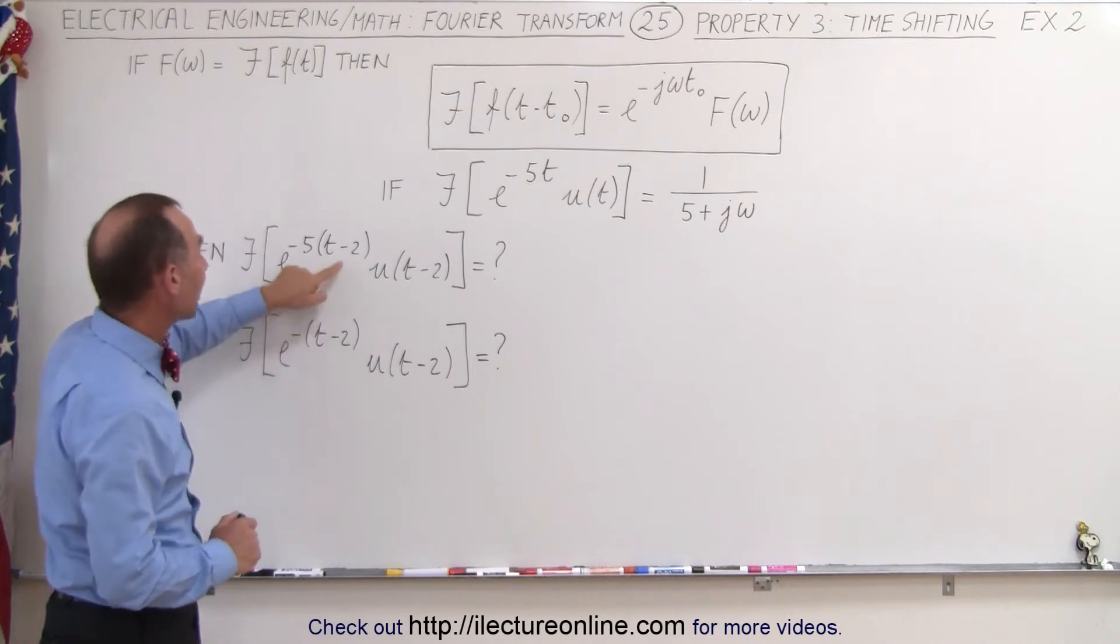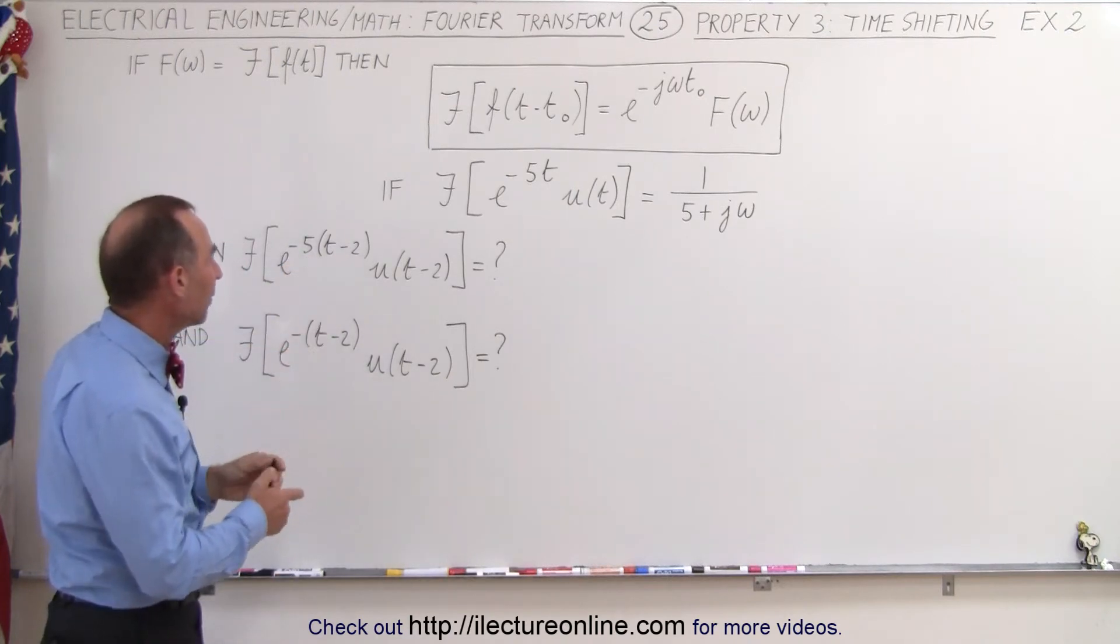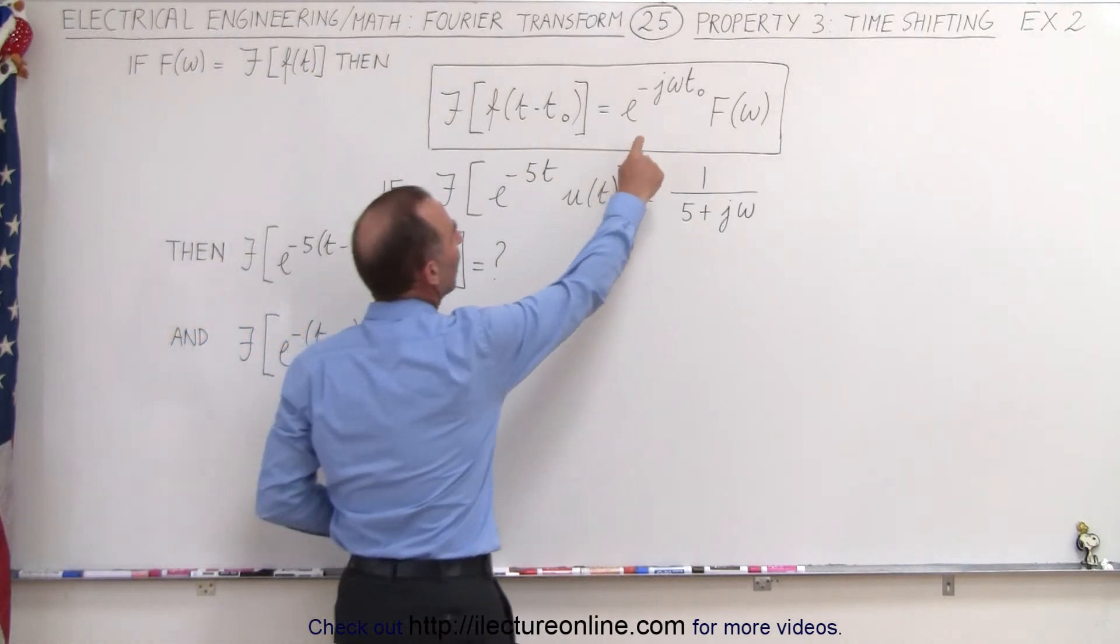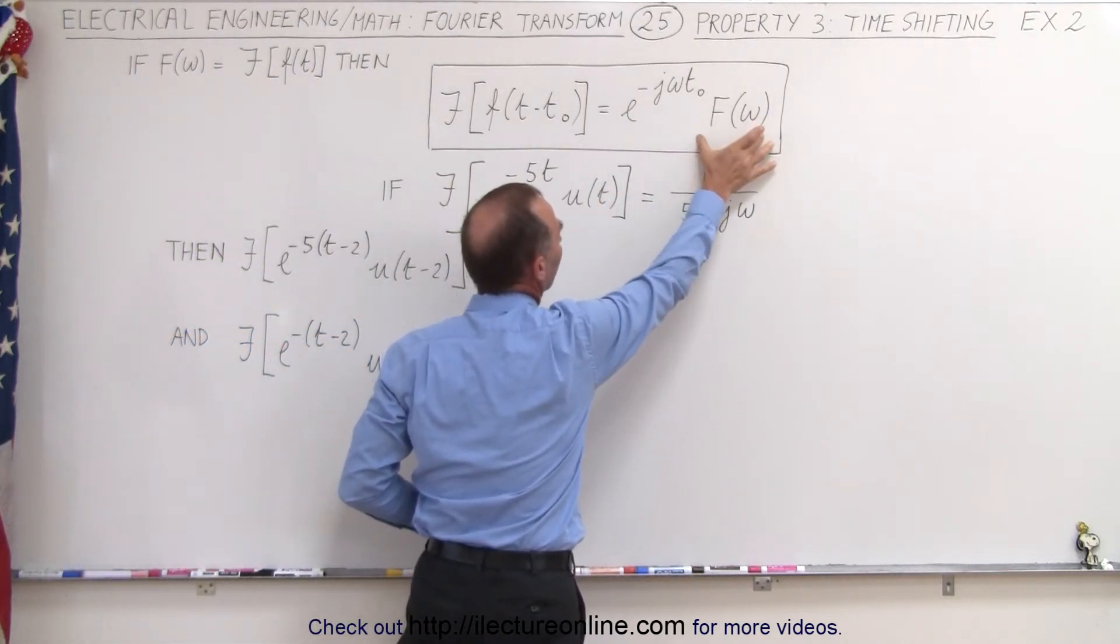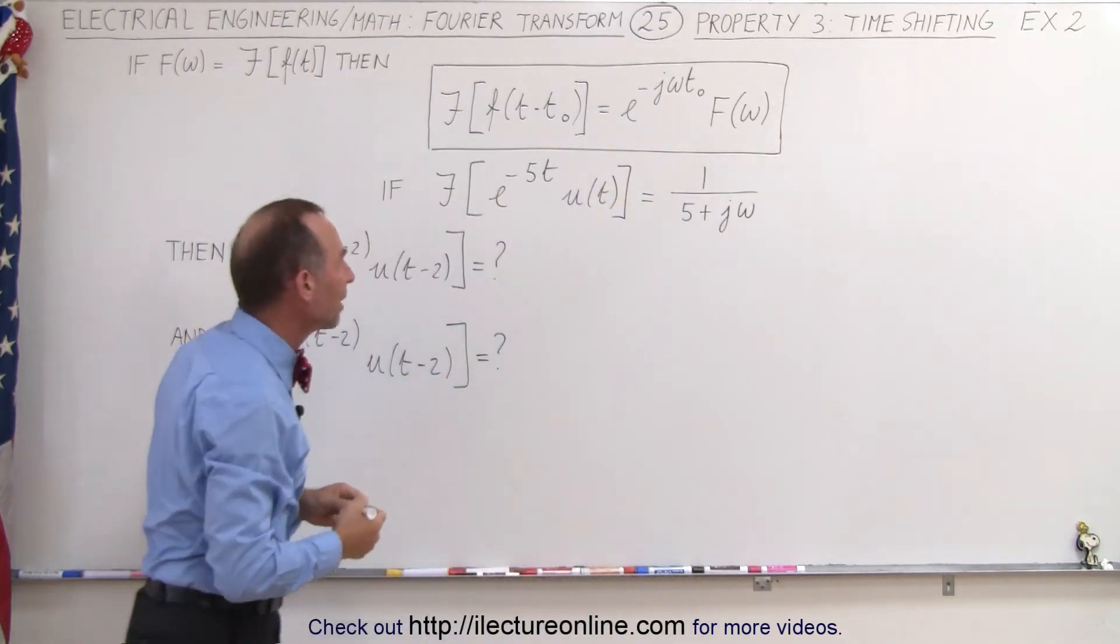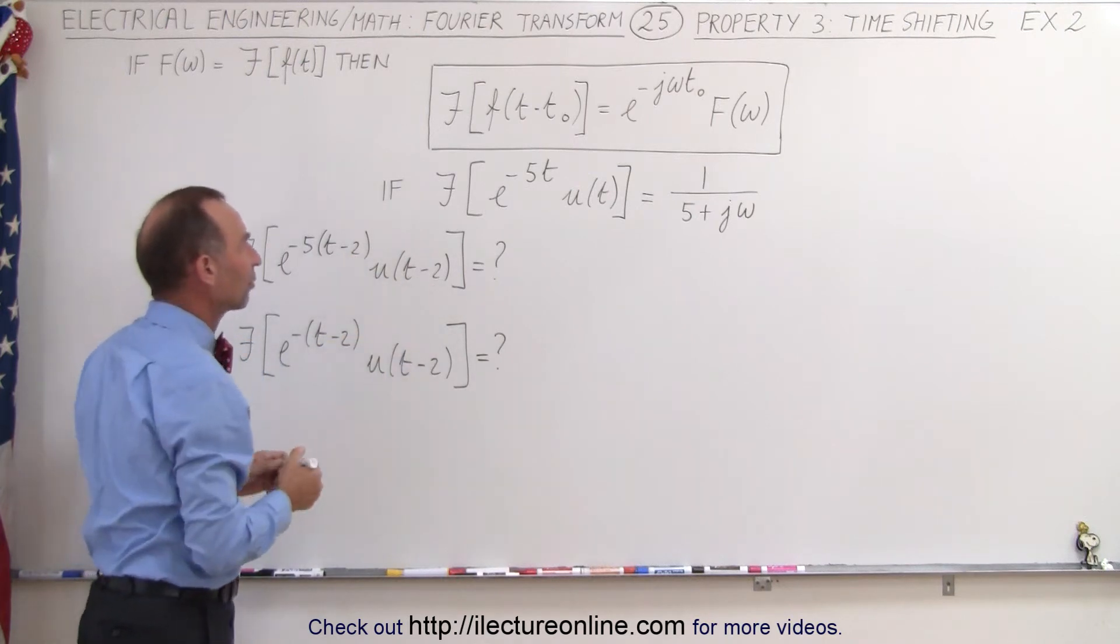Now what happens when we have a time shift t minus 2? Well, just like before, we have to add this term right here. We have to multiply the original Fourier transform times e to the minus jω times t, because nothing else has changed. Simply a time shift has occurred.